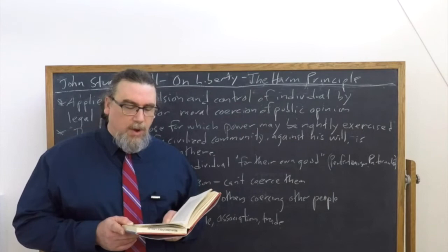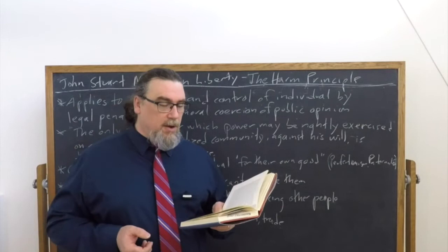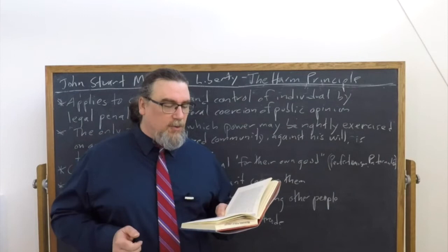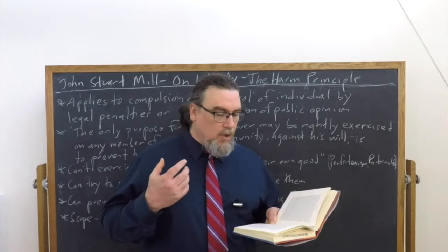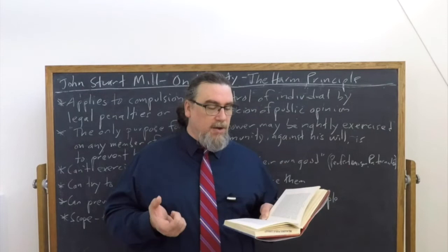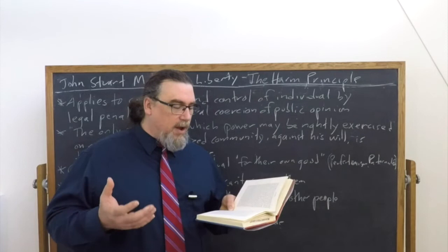Going back to association and lifestyle, there's a nice passage from chapter four that explains this. When we look at how we regard other people — whether we think they're decent or disgusting or somewhere in between, how they've developed in terms of human nature, whether they're nearer to the ideal perfection of it or grossly deficient — we're going to have sentiments: admiration or the opposite, which we might call disgust. He says that though doing no wrong to anyone, a person may act so as to compel us to judge him and to feel toward him as a fool or as a being of an inferior order. Since this judgment and feeling are a fact which he would prefer to avoid, it is doing him a service to warn him of it beforehand as of any other disagreeable consequence to which he exposes himself.